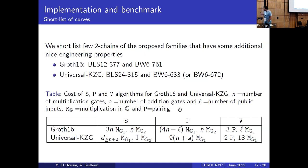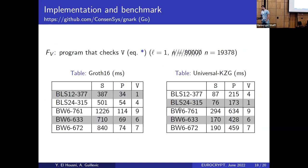For Groth16, the prover computation takes place only in G1; for universal KZG (e.g., PLONK), it also involves GT. Translating state-of-the-art BLS12 curve implementations into an arithmetic circuit originally results in 80,000 multiplication gates; we reduced this to 19,000. We present benchmarks for the shortlisted two-chain curves across setup, prove, and verify algorithms.